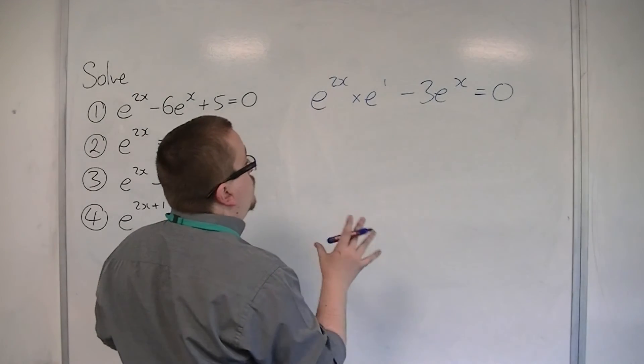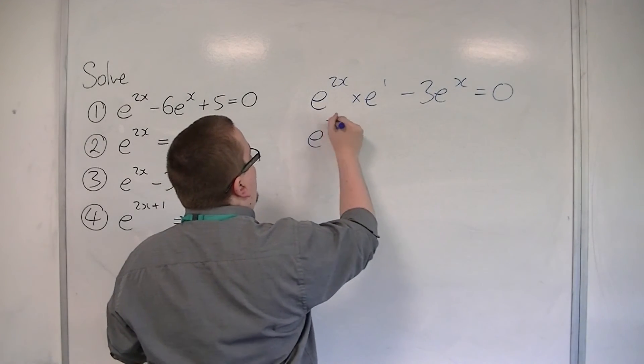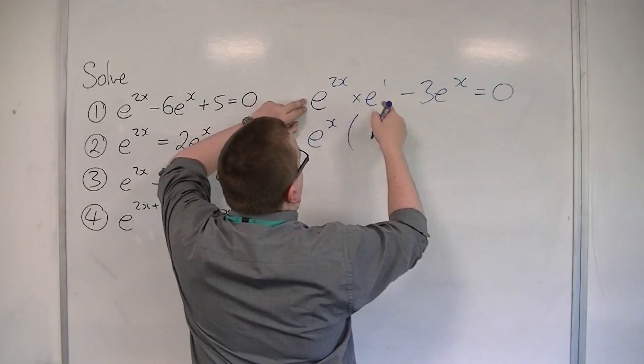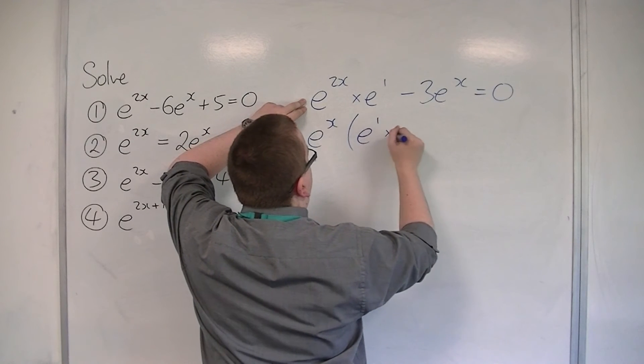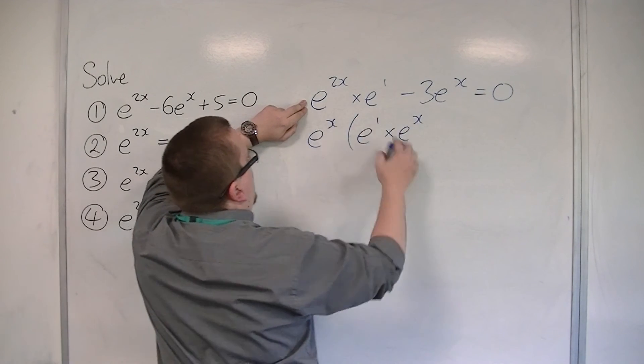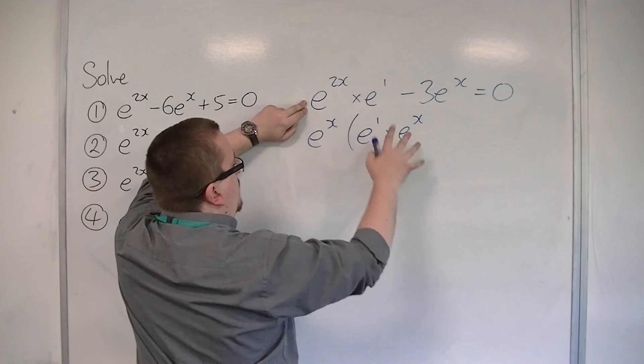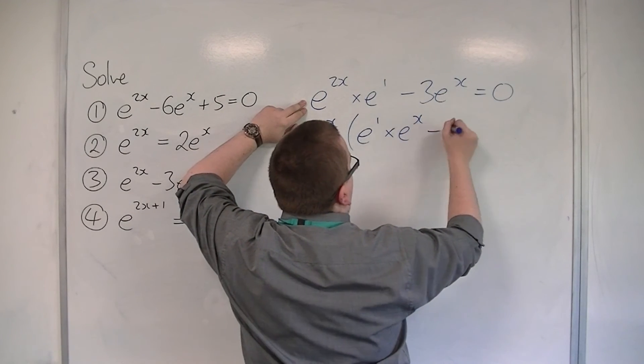The next thing I'm going to do is factorise. So I'm going to take e to the x outside, and I'm going to have e to the 1 times e to the x from there. I've just reversed the e to the 1, and from here I'll have minus 3.